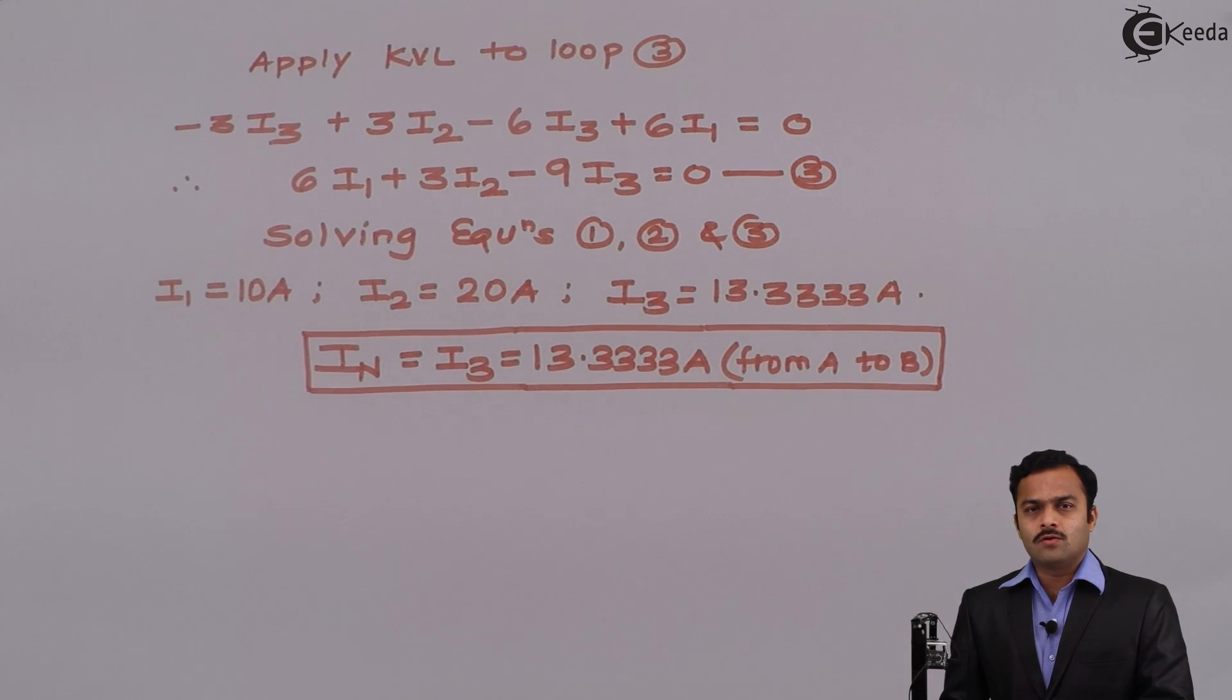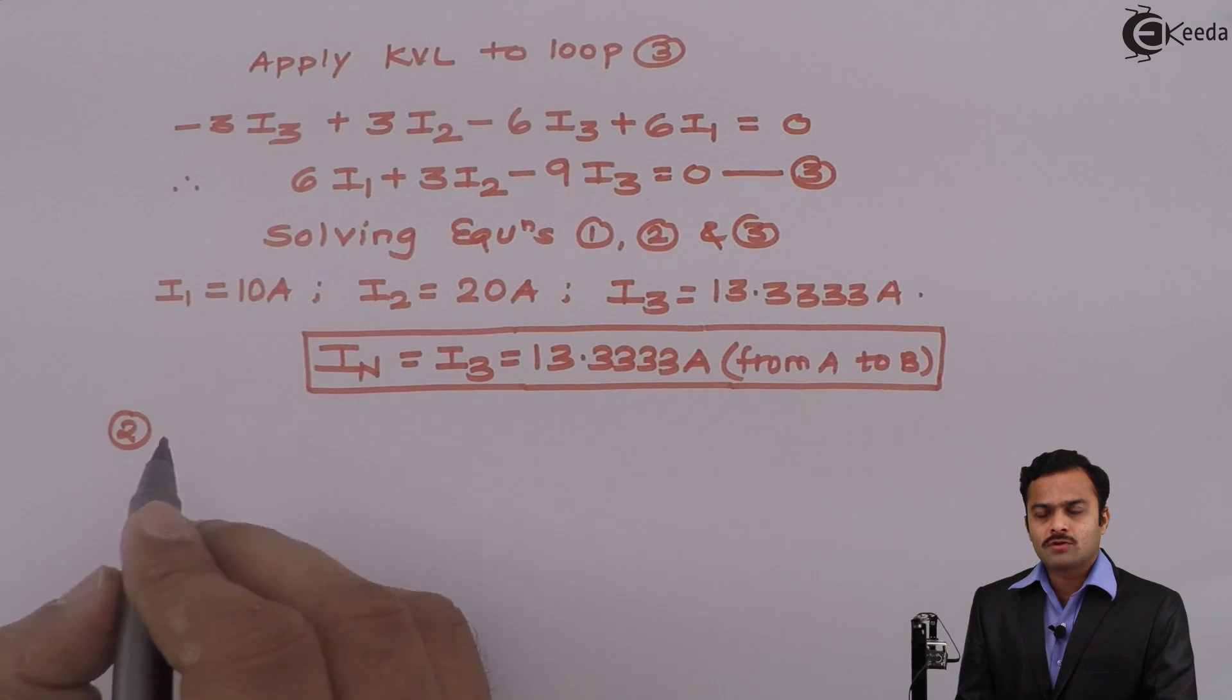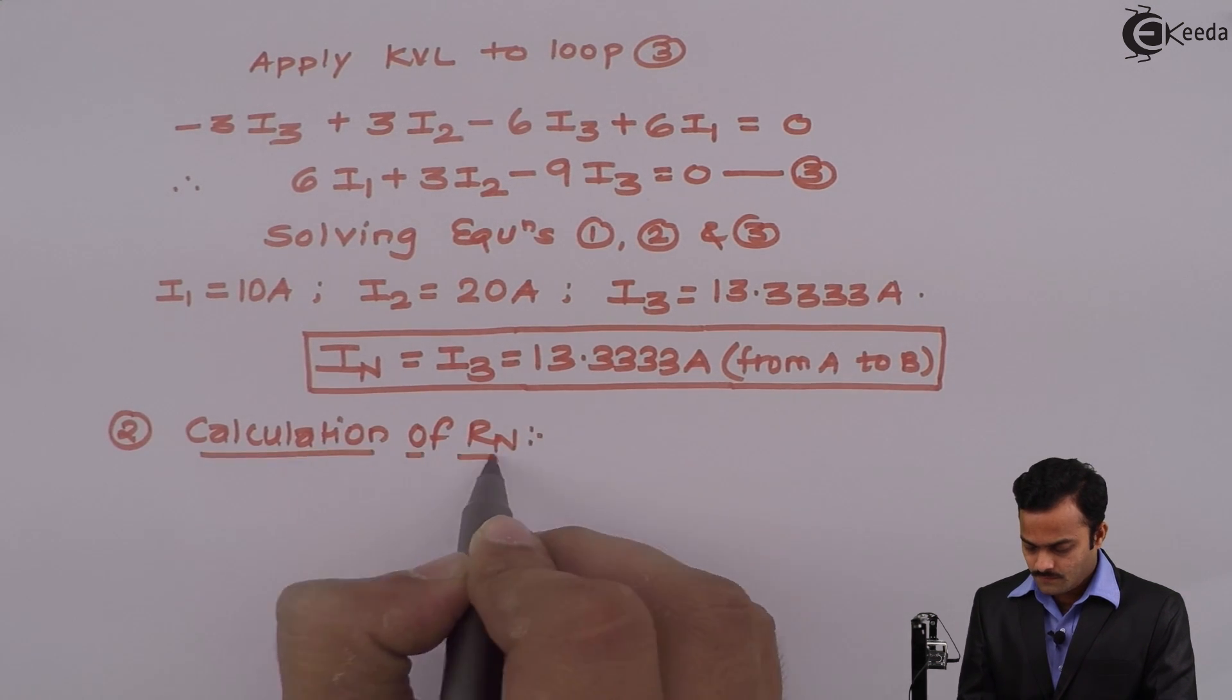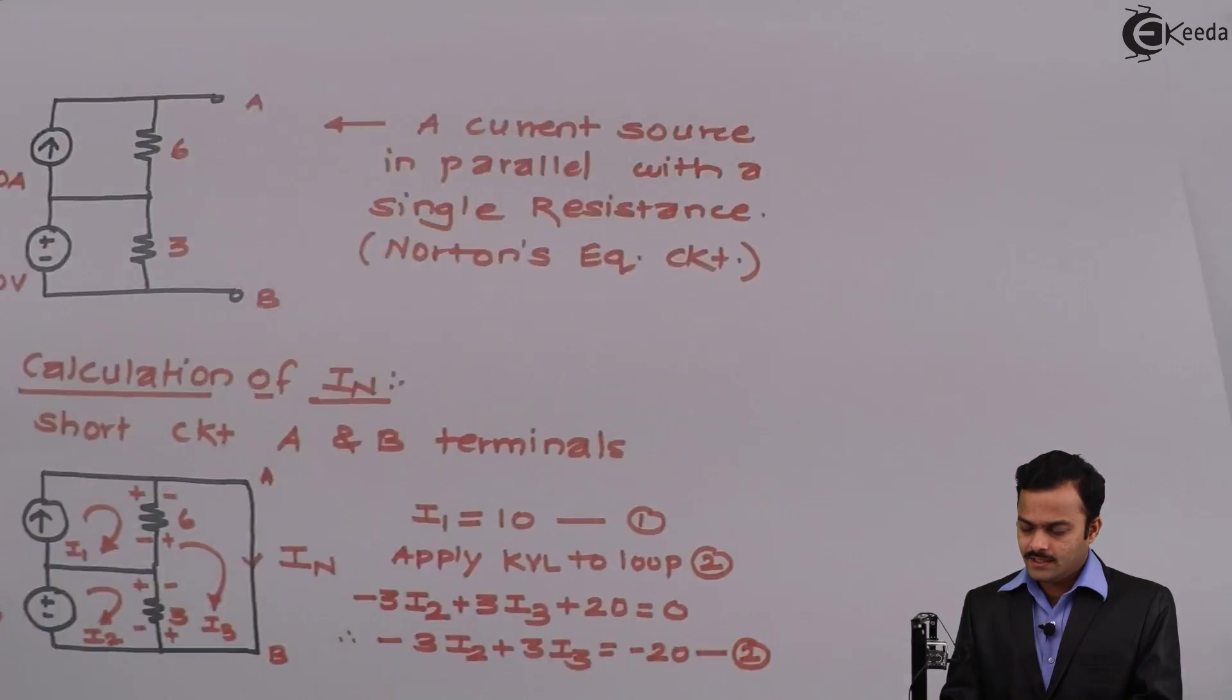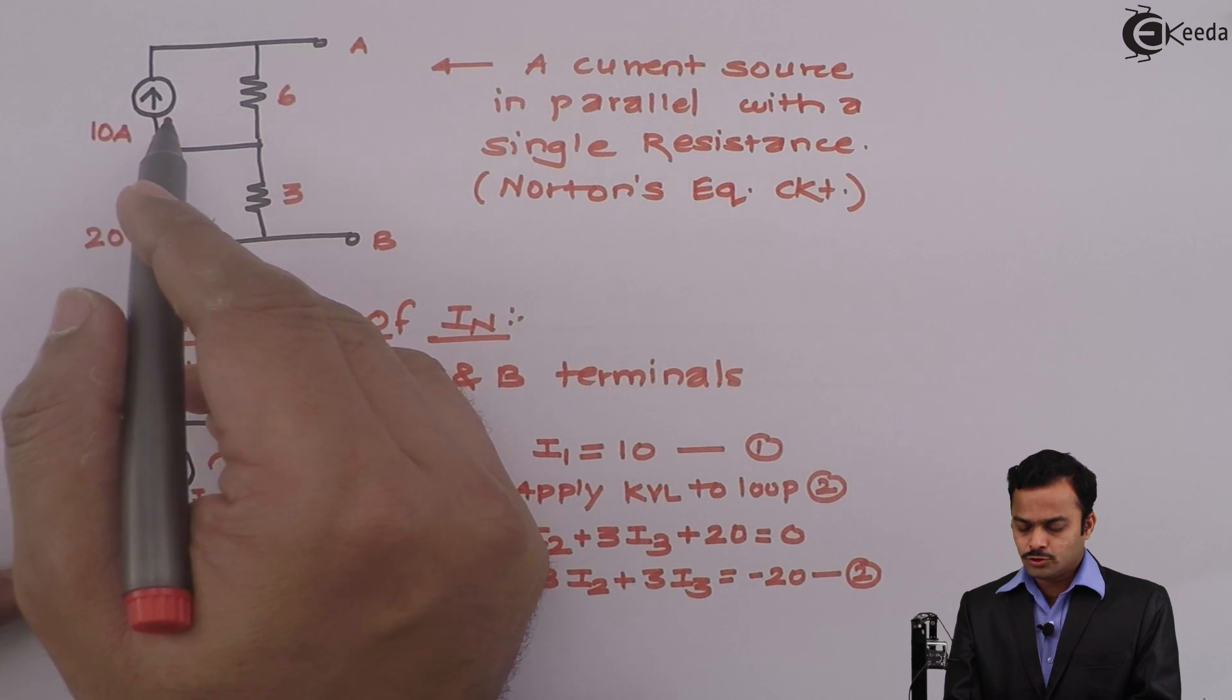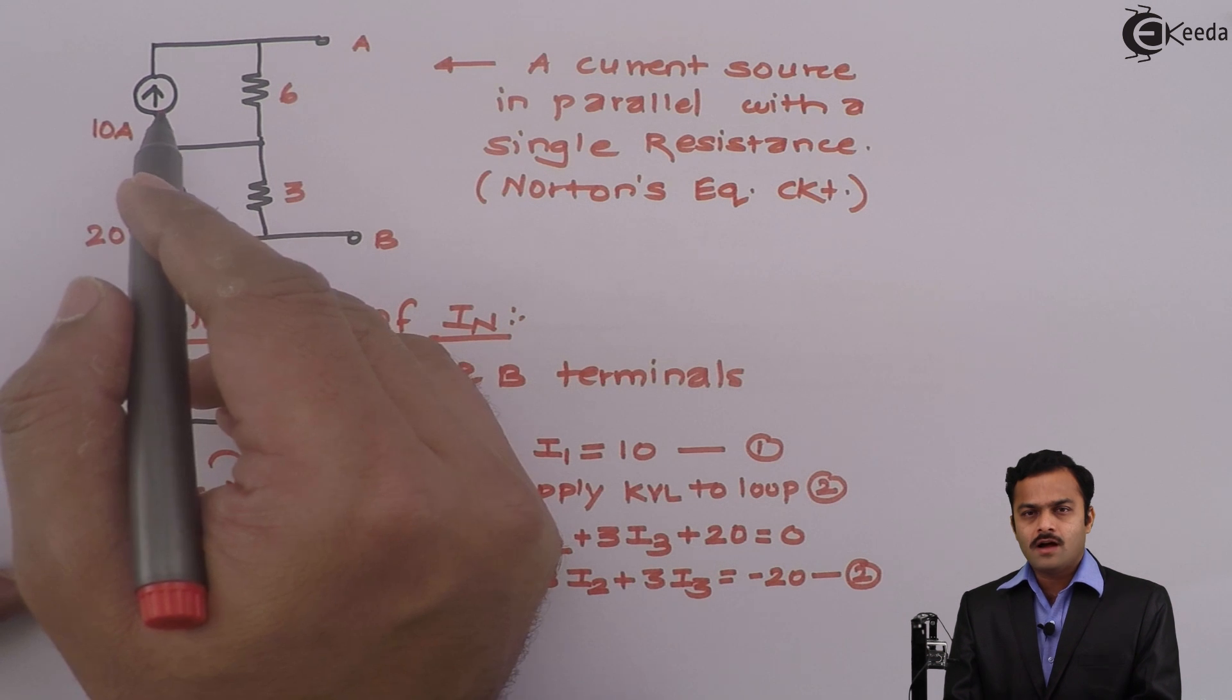Step number 1 is over. Let's go to step number 2: calculation of Rn. For this we need to open circuit the load resistance, but luckily it's not given, so it's already open.